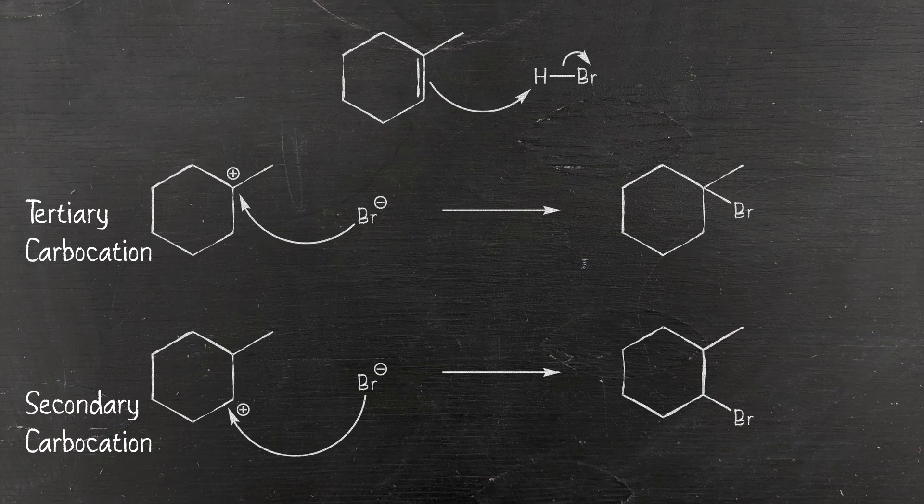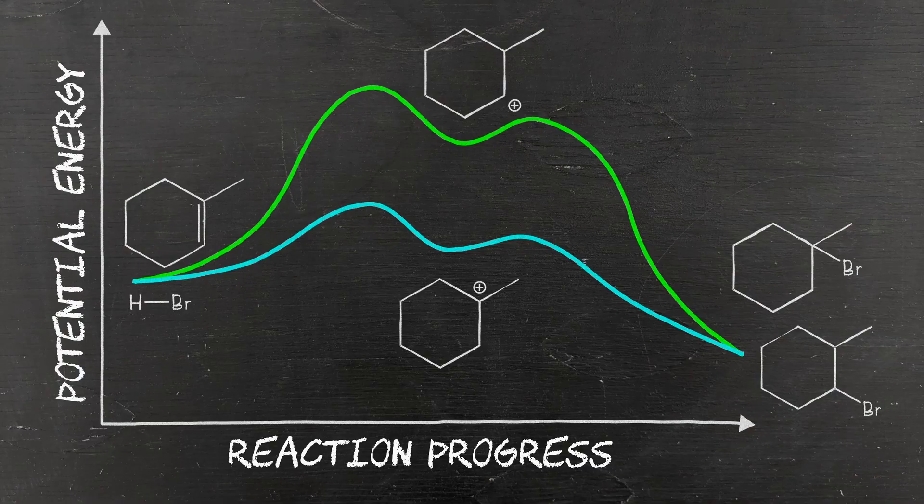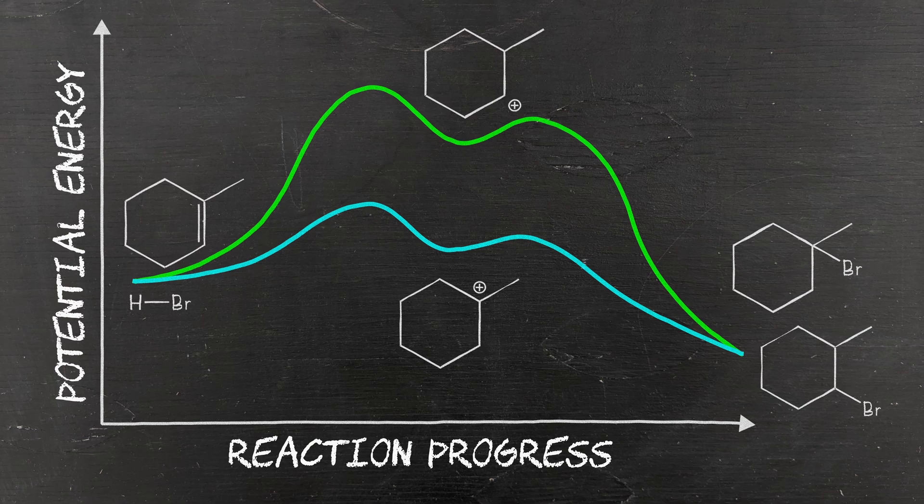Tertiary carbocations are more stable than secondary, and we can understand how the stability results in one major product forming when we look at the reaction coordinate diagram. The energy required to overcome the activation barrier and form the tertiary carbocation is much lower than the energy required to form the secondary, and so the reaction primarily proceeds via this pathway.